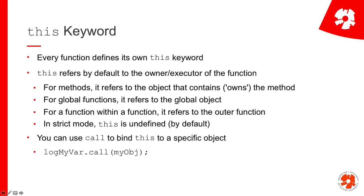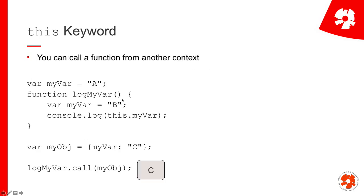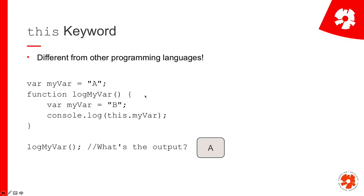If the function is global, `this` refers to the global object. That's the first case we had: the function is not owned by anything specific - it's owned by my JavaScript file, the global object. This means `this` points to the global scope, points to myvar. That's why I'm getting A and not B.